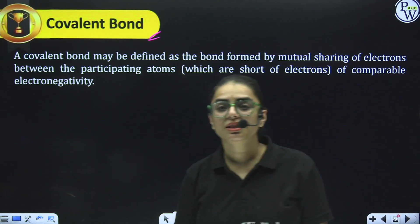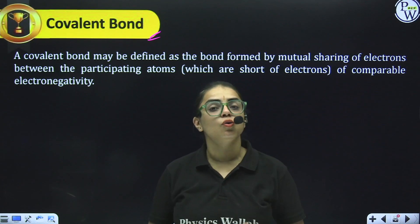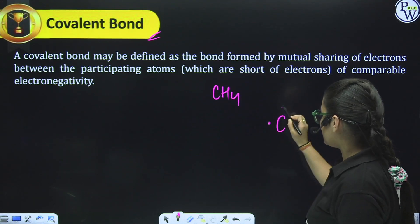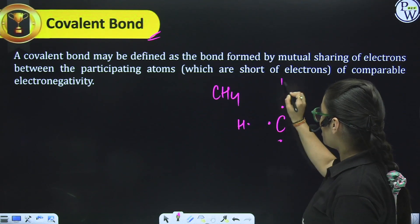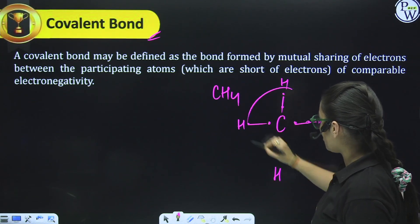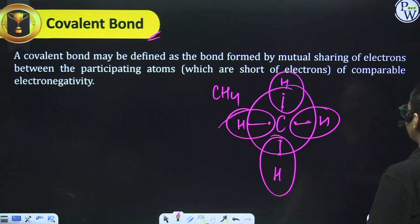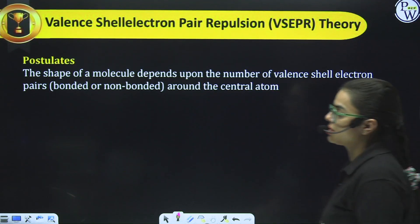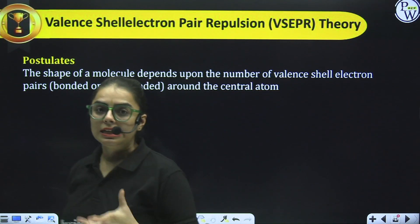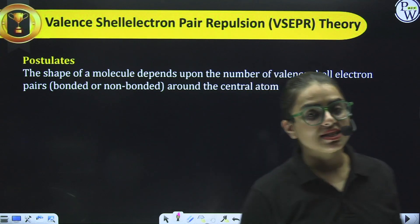Covalent bond is the bond created by sharing of electrons between atoms. For example, in CH₄, carbon has 4 electrons in the outermost shell and hydrogen has 1 electron each — the sharing of electrons between them creates a covalent bond. Now comes the most important topic: VSEPR theory — Valence Shell Electron Pair Repulsion theory.